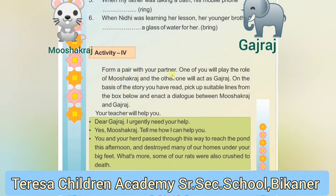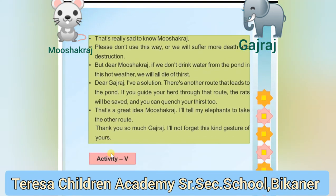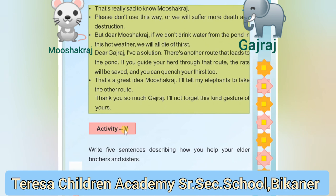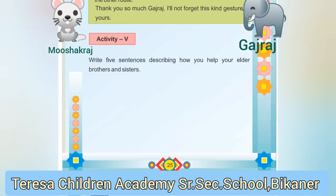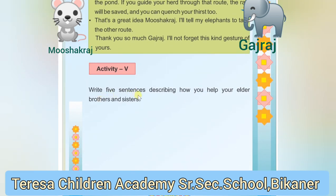Activity Four: Form a pair with your partner. Pick up suitable lines from the box below and create a dialogue between Mushak Raj and Gaj Raj. Activity Five: Write five sentences describing how you help your elder brothers and sisters.